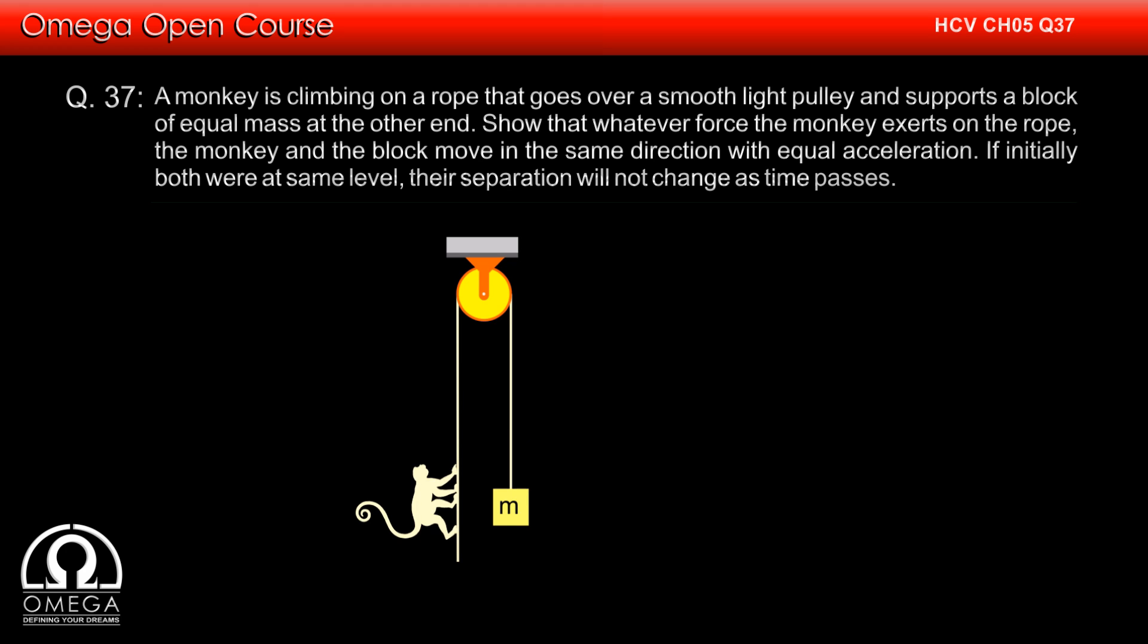Now suppose the monkey increases his force on the rope to move up. Since the tension is same throughout the string, the increment in the force is transferred to the block on the other side and it experiences the same force. Since both have same mass, they both move with the same acceleration in the same direction.